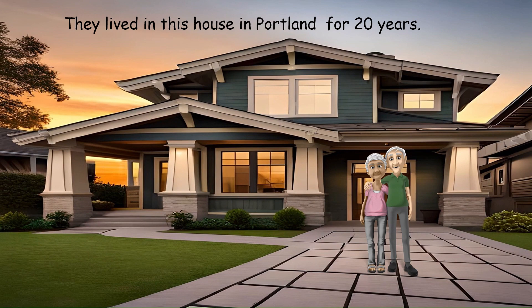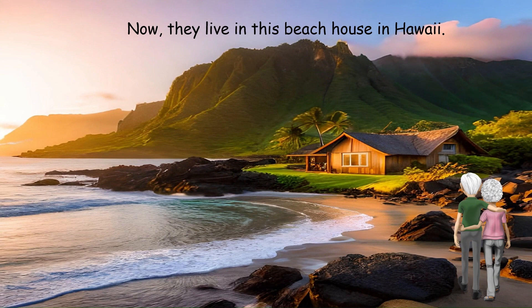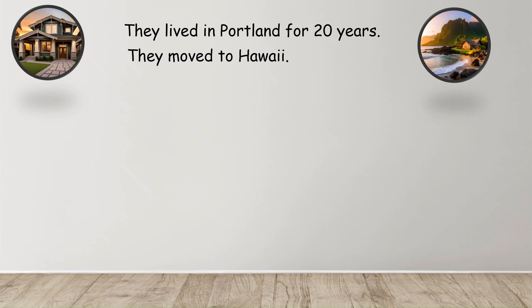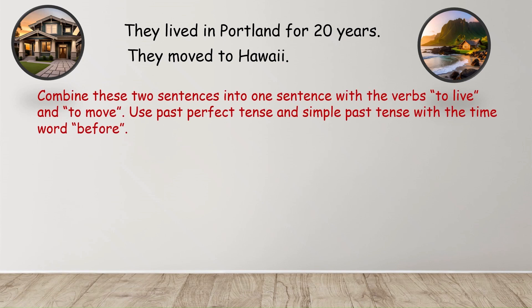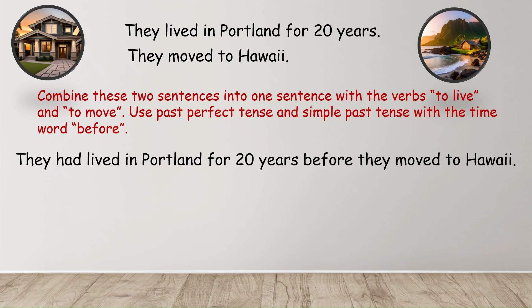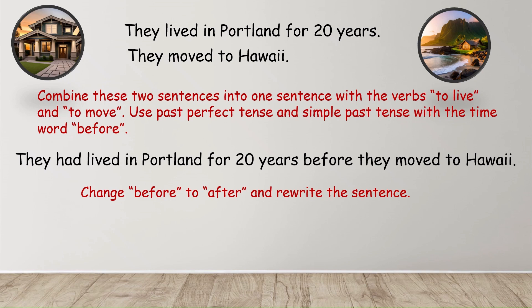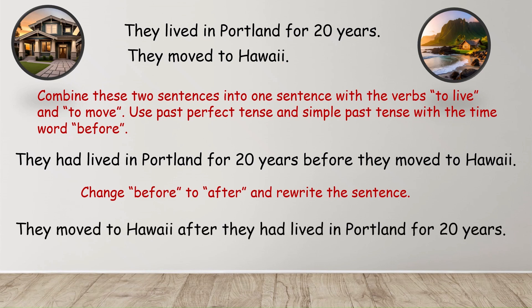They lived in this house in Portland for 20 years. Now they live in this beach house in Hawaii. They lived in Portland for 20 years. They moved to Hawaii. Combine these two sentences into one using the verbs 'to live' and 'to move' with past perfect and simple past tense and the time word 'before': They had lived in Portland for 20 years before they moved to Hawaii. Change 'before' to 'after' and rewrite: They moved to Hawaii after they had lived in Portland for 20 years.